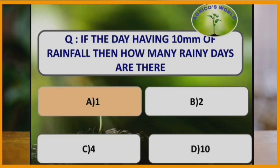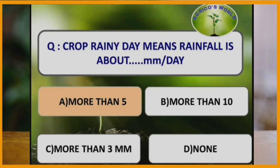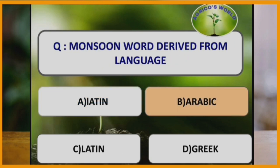If a day has 10 mm of rainfall, how many rainy days are there? The answer is one. If rainfall is greater than 2.5 mm per day, it is considered one rainy day. Crop rainy day means rainfall of more than 5 mm per day. The word monsoon is derived from the Arabic language.